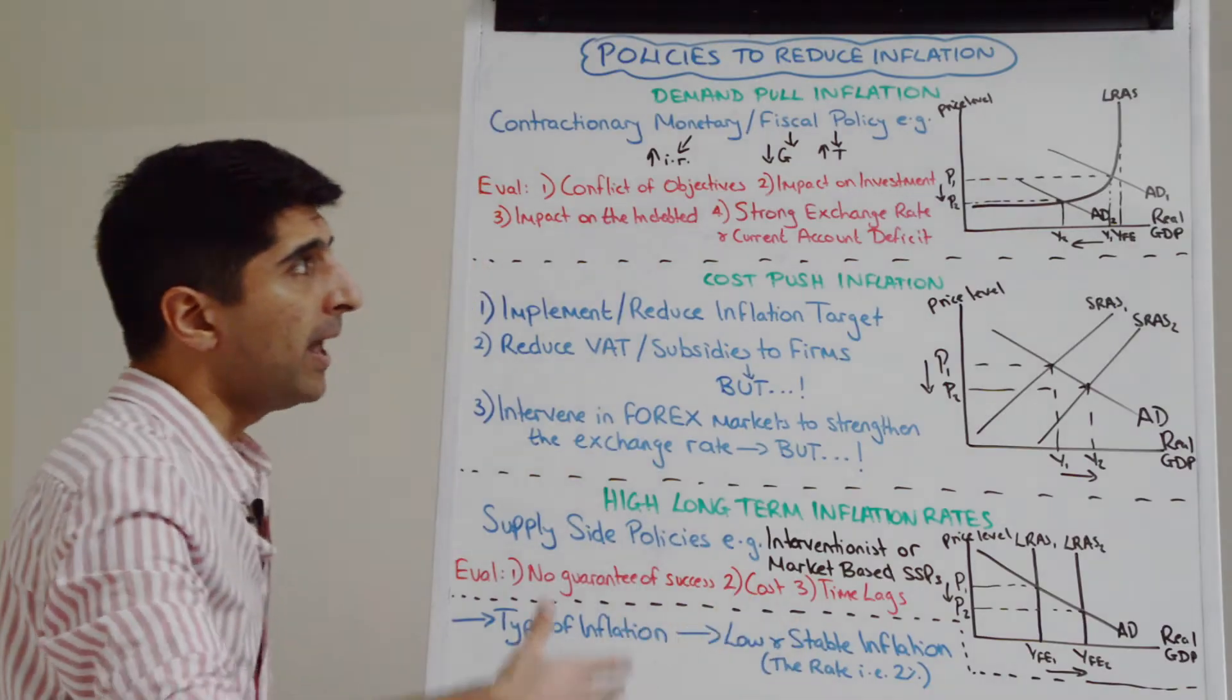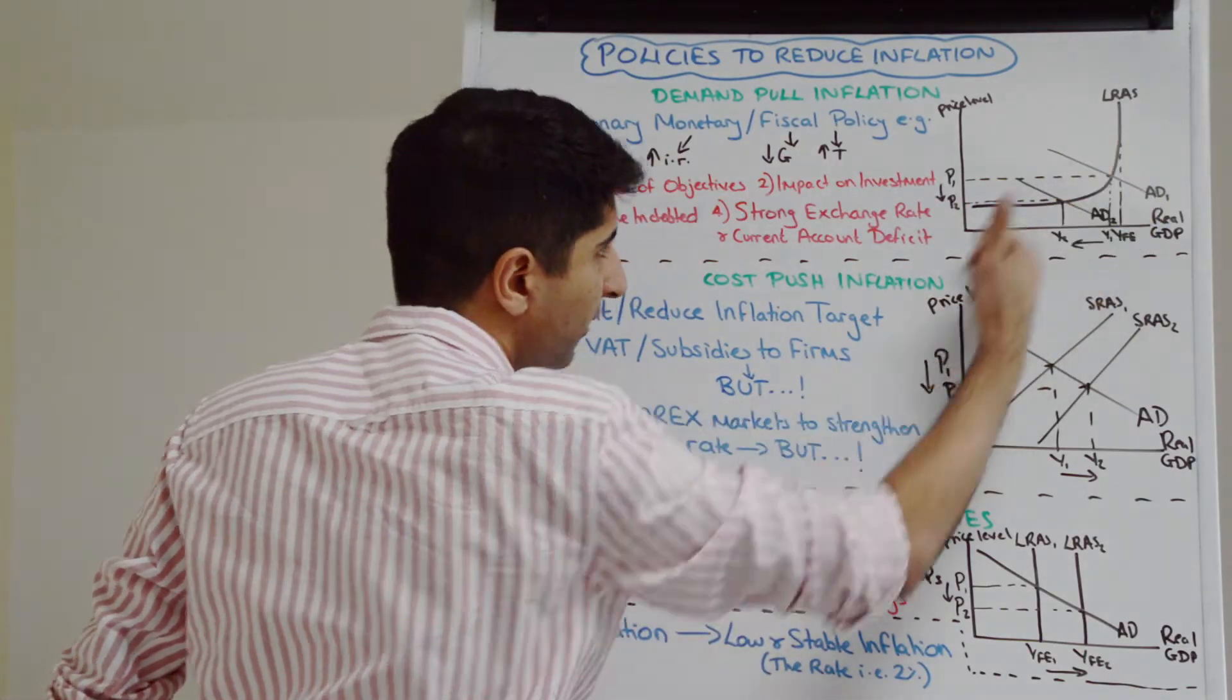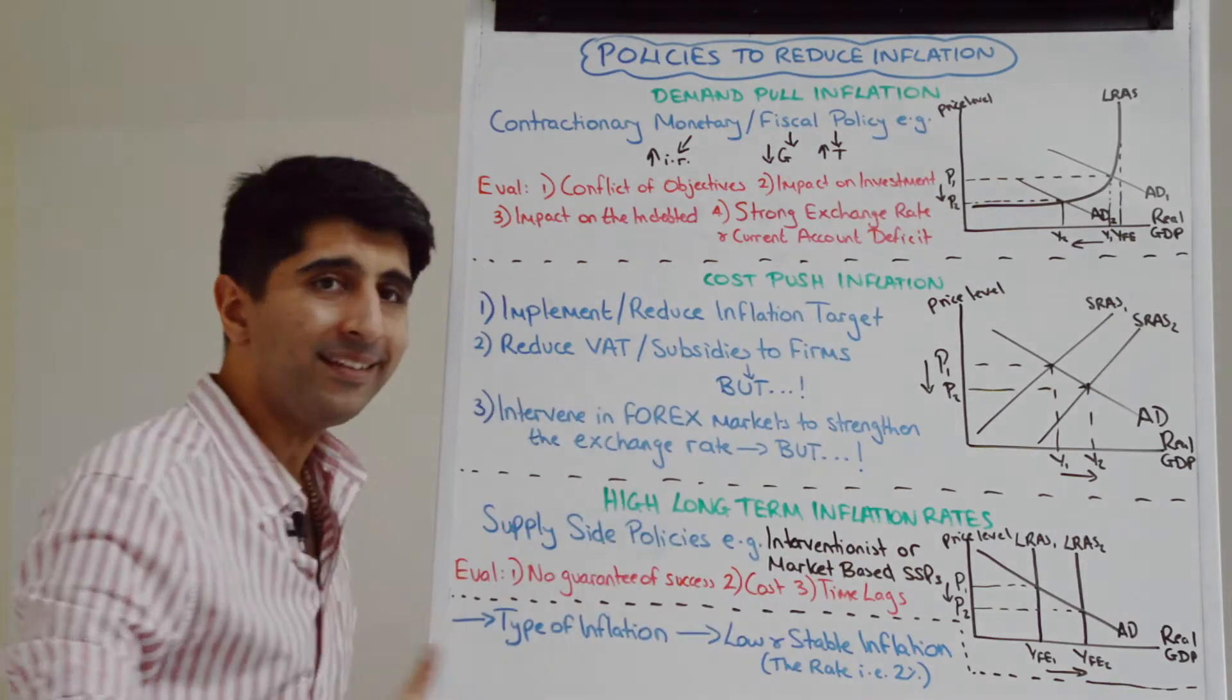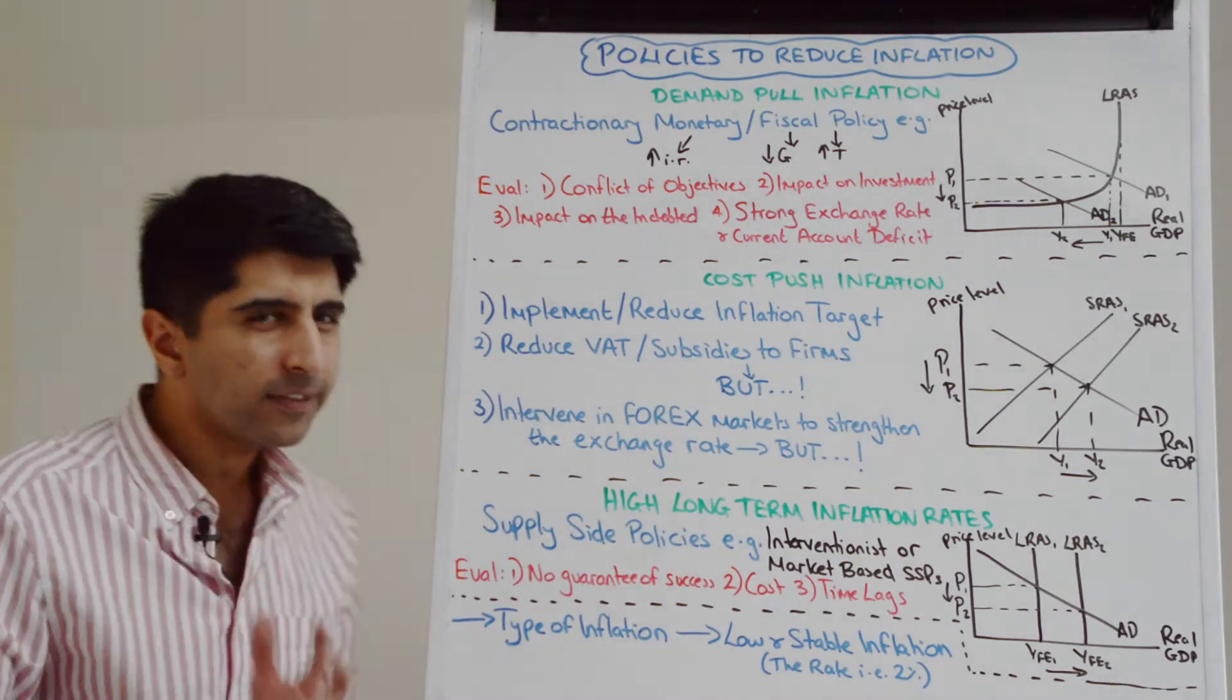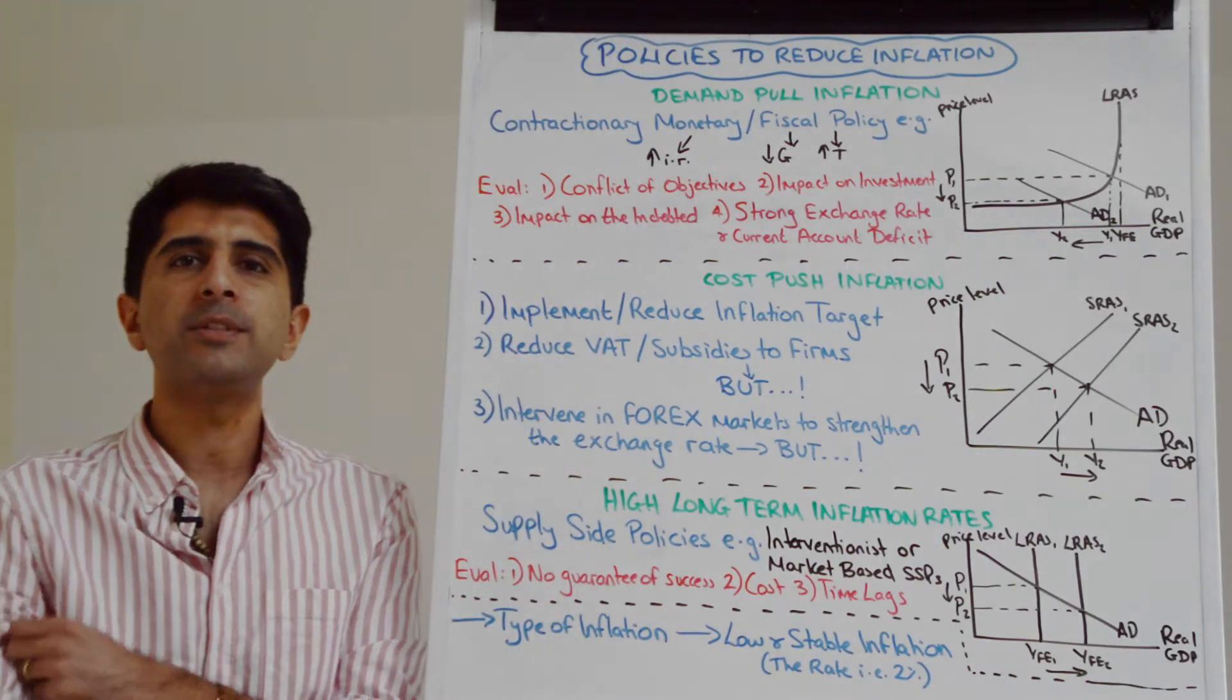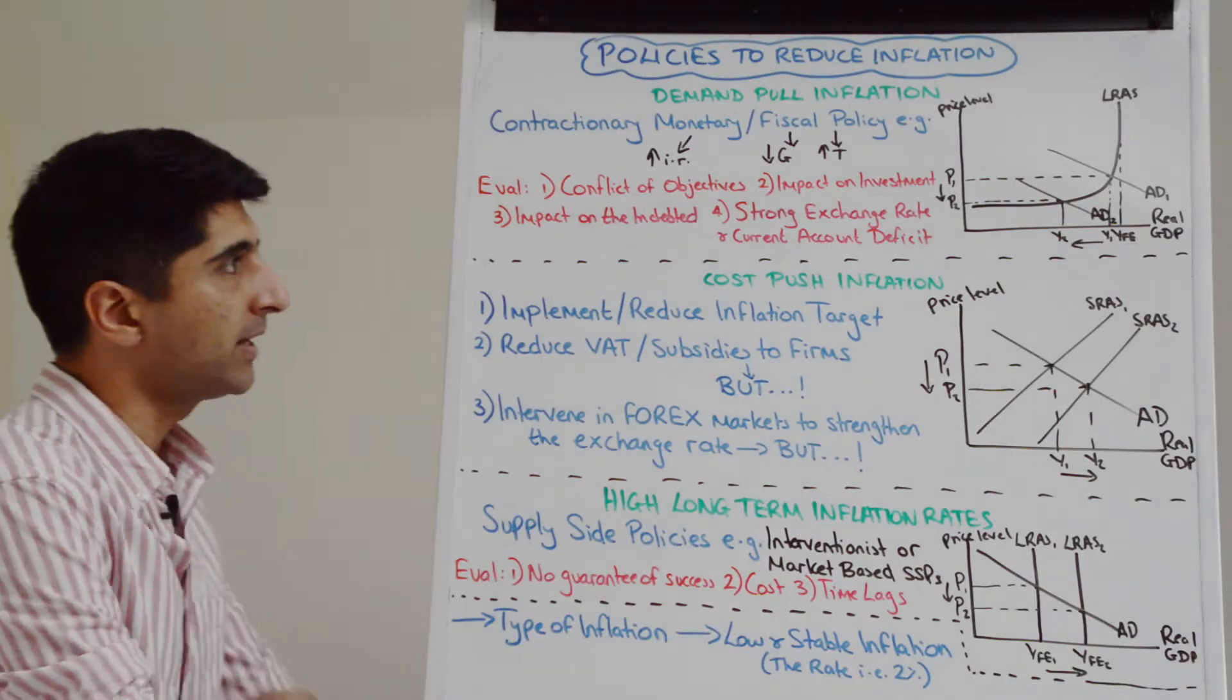And we can see on a diagram if successful aggregate demand will shift to the left and as that happens we see a reduction in demand pull inflationary pressure. We might want to call this disinflationary pressure. But now let's evaluate. Easy evaluation to start with is the conflict of macro objectives that we are likely to see - trade-offs with macro objectives.